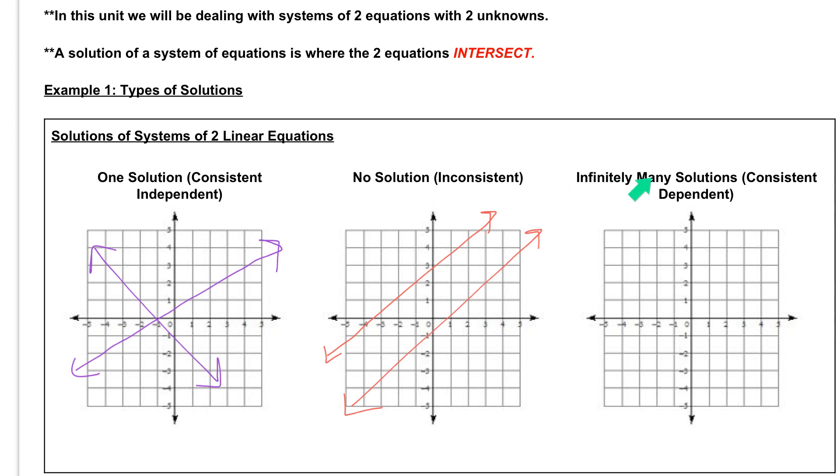The third one is that we could have infinitely many solutions. This is called consistent dependent. And what that means is you have the first line right here, and when you graph the second line, you are graphing that line directly on top of the first one. So it's basically the same exact line, which means you have infinitely many solutions because every single point on the line is on both lines.